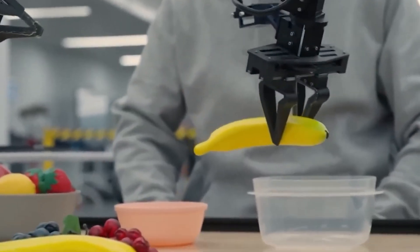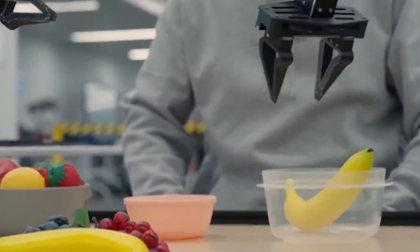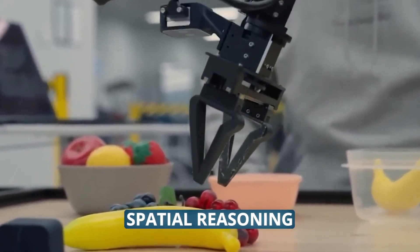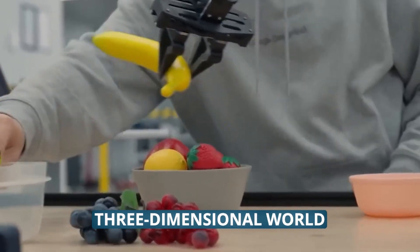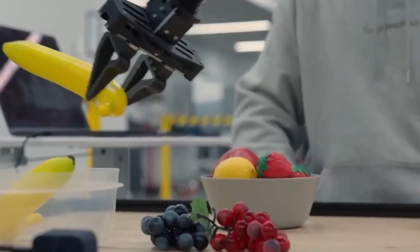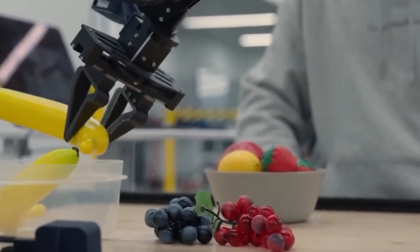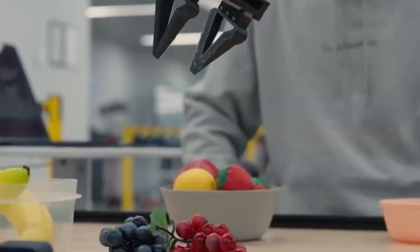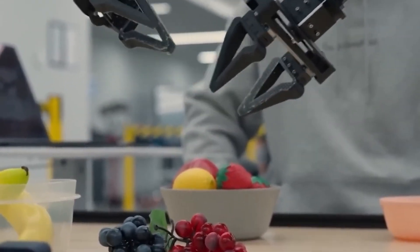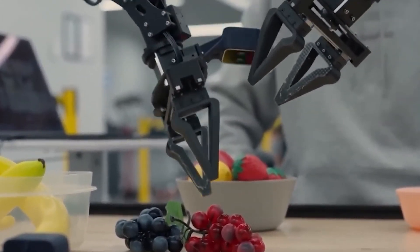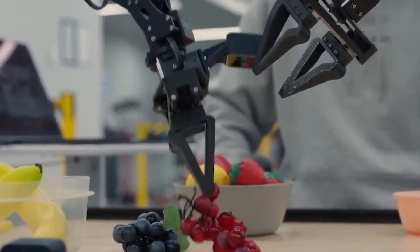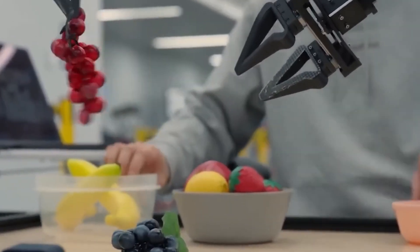The Gemini Robotics ER variant takes this even further, focusing specifically on spatial reasoning, understanding the three-dimensional world, identifying optimal grasping points, and planning safe movement paths. According to Google, this model scores two to three times higher in success rate compared to baseline models when handling complex spatial tasks.